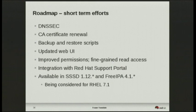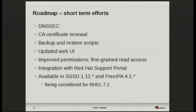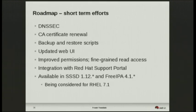On the roadmap, short-term efforts include DNSSEC, automatic CA certificate renewal — so when your CA certificate expires it can be renewed and pushed out to clients — backup and restore scripts, an updated web UI, improved permissions and fine-grained read access. In FreeIPA 3 anyone could read anything but write access was fine-grained; that's now been improved so read access is also fine-grained. Integration with the Red Hat support portal. All of these features are available in SSSD 1.12 and FreeIPA 4.1, and are being considered for release in RHEL 7.1.